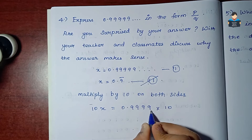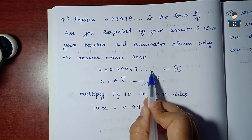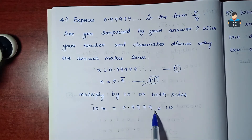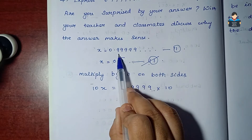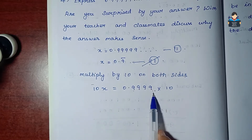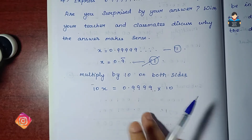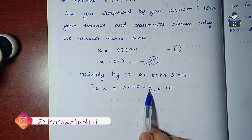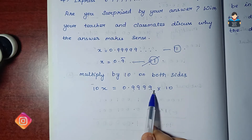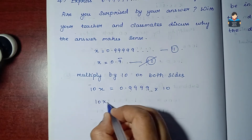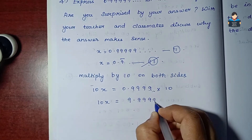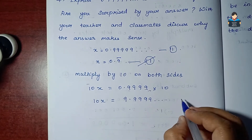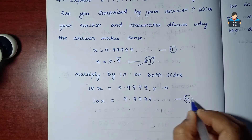Now multiply: 10x is equal to 0.9999... multiplied by 10. The decimal point repeats. So 10x equals 9.9999... This is our second equation.